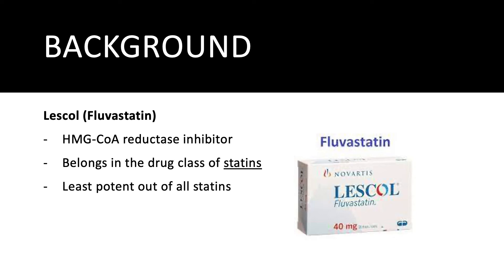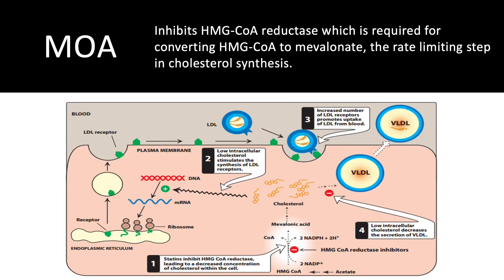Some more background about fluvastatin: it is an HMG-CoA reductase inhibitor. It belongs to the drug class of statins and is the least potent of all statins. The mechanism of action is that it inhibits HMG-CoA reductase, which is required for converting HMG-CoA to mevalonate — the limiting step of cholesterol synthesis. As you can see in diagram number one, the statin is inhibiting HMG-CoA from being converted into mevalonate acid, which in turn becomes cholesterol.